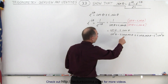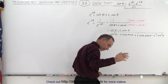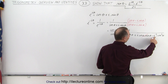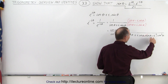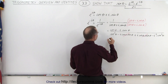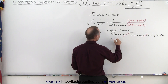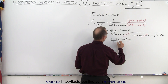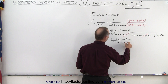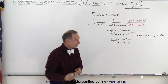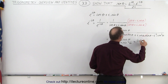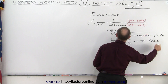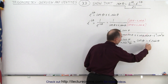Then we realize that those two middle terms cancel out. And we realize that i squared is equal to negative 1, and negative 1 times negative becomes positive 1. So the denominator becomes the cosine squared of theta plus the sine squared of theta, which of course we know is equal to 1.